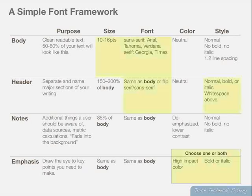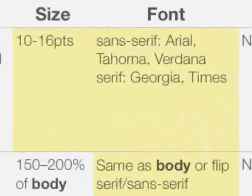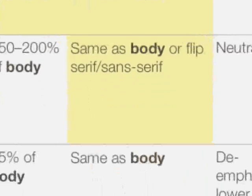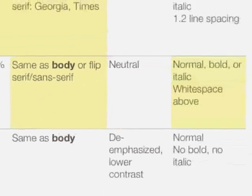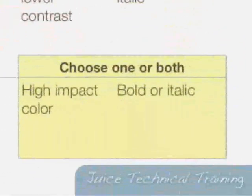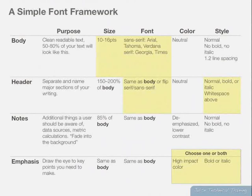So when you look at this, it really comes down to a limited number of decisions that you need to make. I've highlighted the decision points in yellow. You need to choose the size and font of the body. You need to decide if the header is going to flip from serif to sans-serif and if the header is going to have any style. And the final thing is you need to decide what to do about emphasis. Those are all the decisions you need to make.